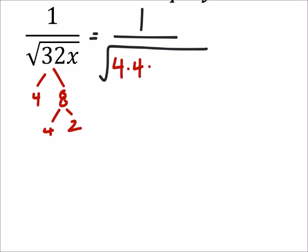And then of course times the x. Now this one is a square root, so actually I can pull out - I've got a pair of fours, so this ends up simplifying to 1 over 4, and now I've only got the square root of 2x.